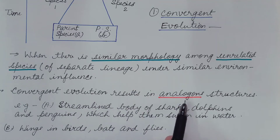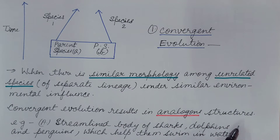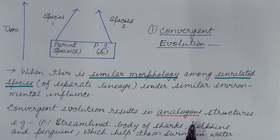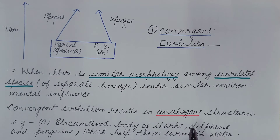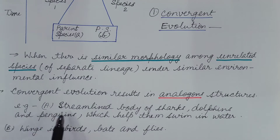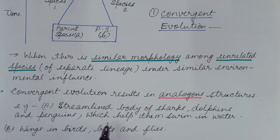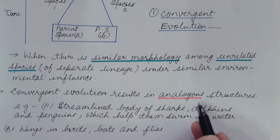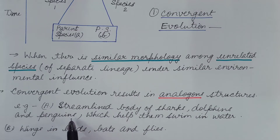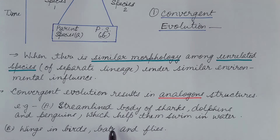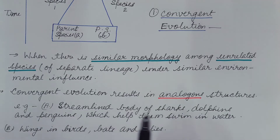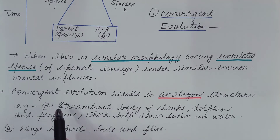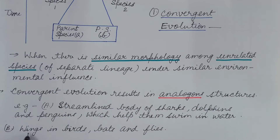Convergent evolution results in analogous structures — organs which appear similar and perform similar functions, but their basic structure and origin is different. An example is the streamlined body of sharks, dolphins, and penguins, which helps them swim in water. Sharks are fish, dolphins are mammals, and penguins are birds, but these are under similar environmental influence — that is, water — so in order to swim, these have streamlined bodies. Another example is wings of birds, bats, and flies: these are of different species, but all have wings which help them fly.